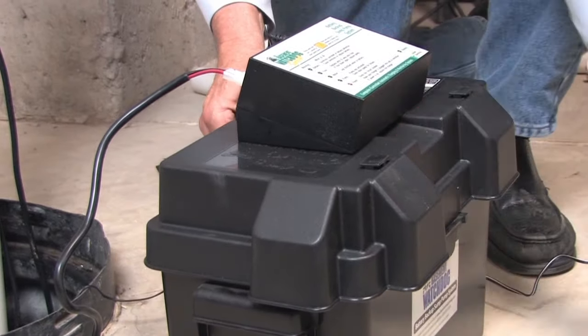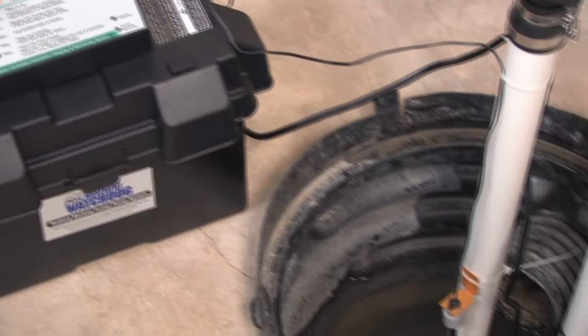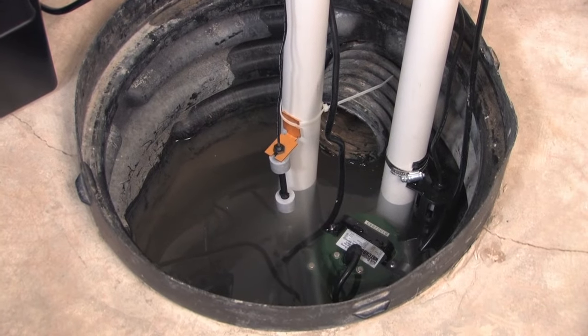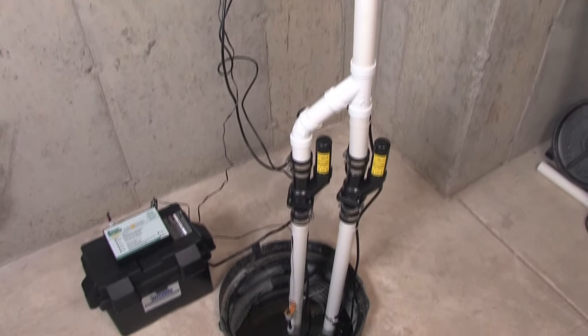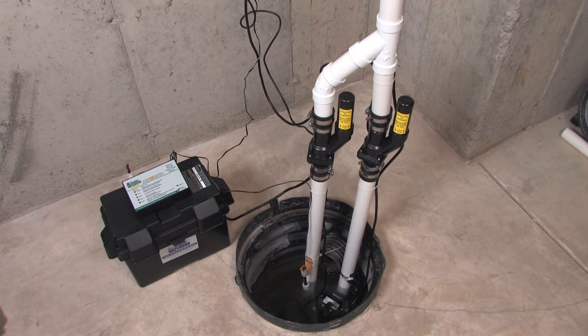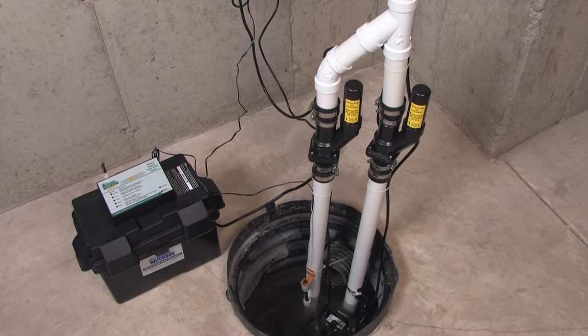Secure the cover on the battery box and be sure to plug in the main AC pump. For a neater installation, secure the cables to the discharge pipes in a couple places. Make sure the wires are not touching each other or overlapping. The installation is now complete.